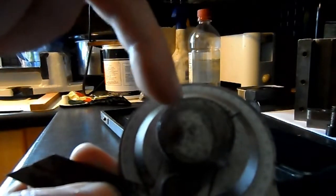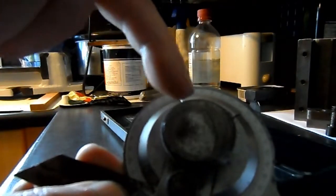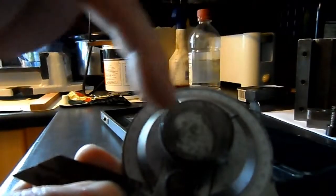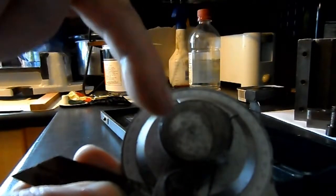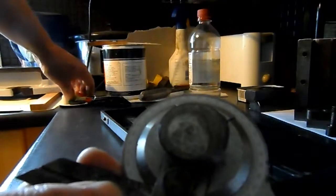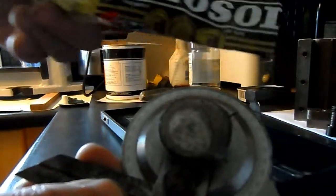So I've got, I took the Scotch Bright pad on the Dremel wheel to remove the light corrosion, and I've now got some Autosol.